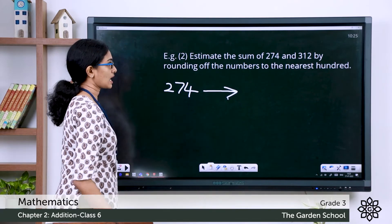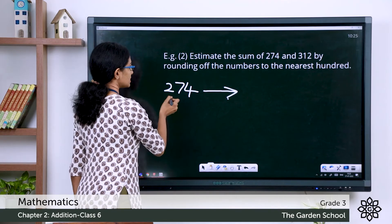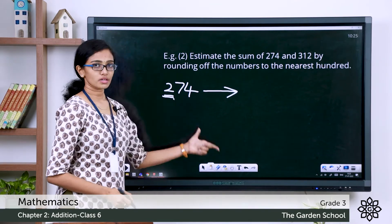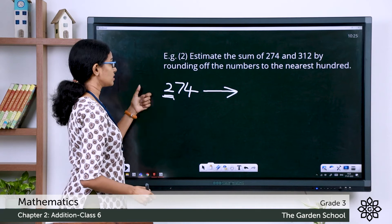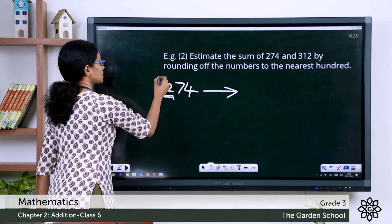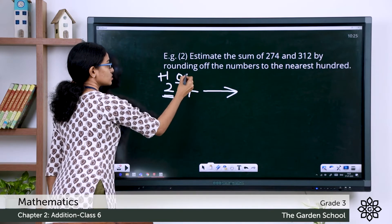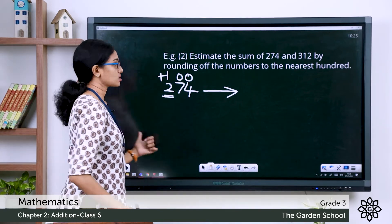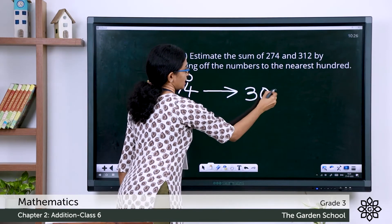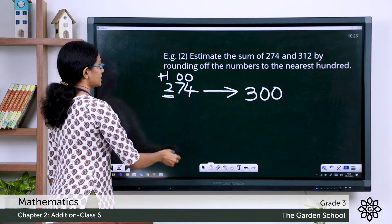274 rounded off to the nearest hundred — the rounded digit is the hundreds digit, which is 2. The digit to the right of it is 7, which is more than five, so let's add one to the rounding digit and change the other digits to the right to zeros. That gives you 300.